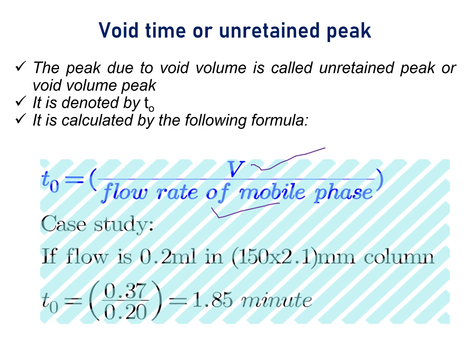Let us consider we have to calculate T0 of a column which dimension is 150 by 2.1 mm. Flow rate of the mobile phase is 0.2 ml per minute. Then T0 will be 0.37, as we have already calculated void volume in the previous slide, divided by 0.20, that is 1.85 minutes. Now you can easily calculate retention time of unretained peak in any HPLC method development.